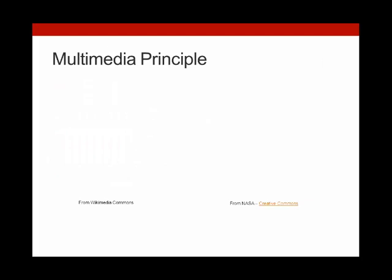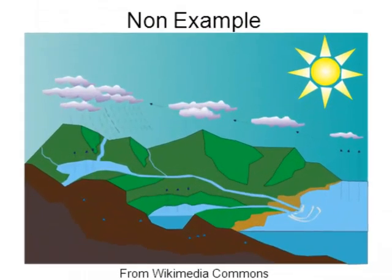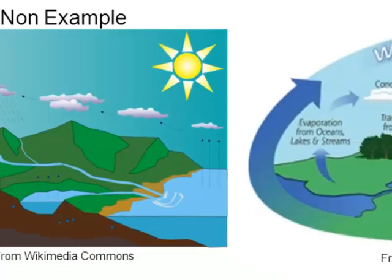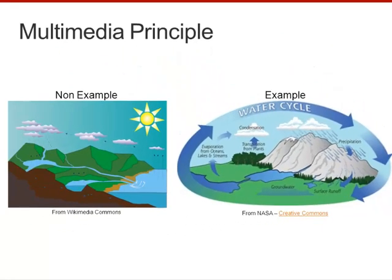The first principle is the multimedia principle. This principle states that words and pictures are better than pictures or words on their own. Take a look at this first example — in this example we have only a picture. The picture alone does not convey a lot of information. However, the second image — the combination of words and images — creates a very instructive graphic explaining the water cycle. The combination of words and pictures is much more powerful than either would be on its own.